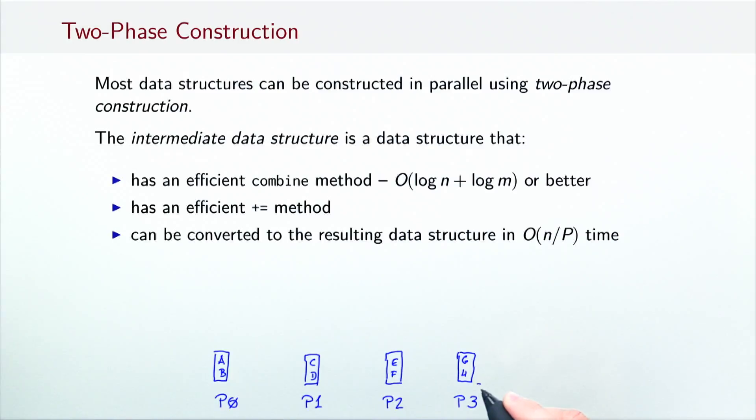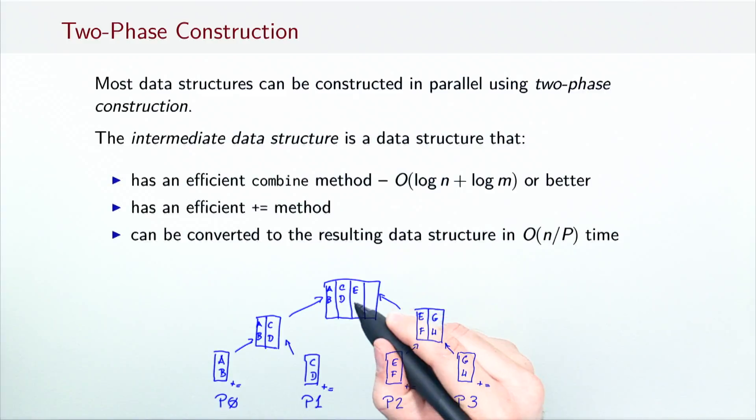In the first phase, different processors build intermediate data structures in parallel by invoking the plus-equals method. These intermediate data structures are then combined in a parallel reduction tree until there is a single intermediate data structure at the root.